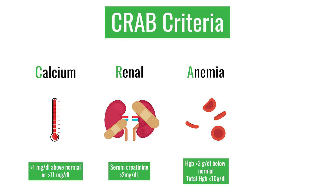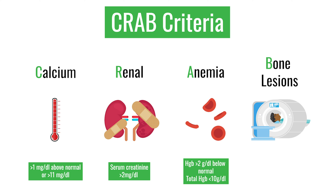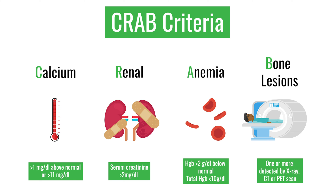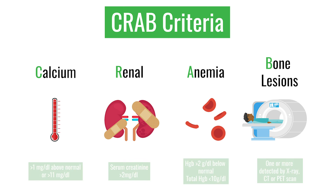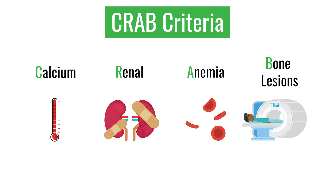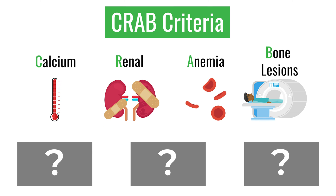The A of the CRAB criteria was anemia — a drop in hemoglobin greater than two grams below the lower limit of normal, or a total hemoglobin less than 10 grams per deciliter. The B of the CRAB criteria was bone lesions: myeloma patients can present with bone thinning or pathologic fractures, and one or more lesions detected on x-ray, CT scan, or PET scan qualify.